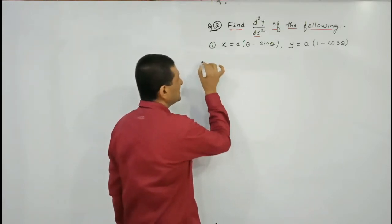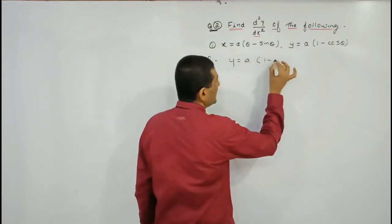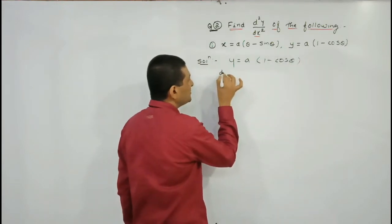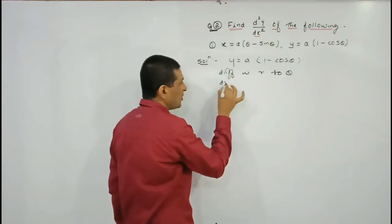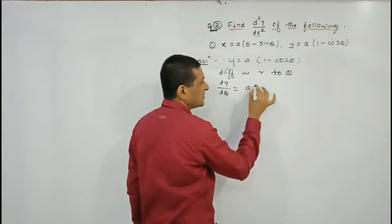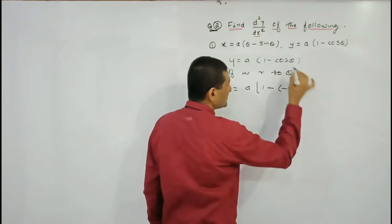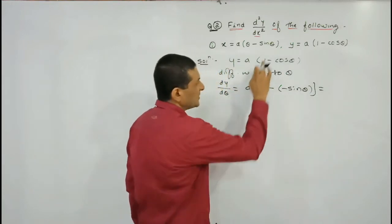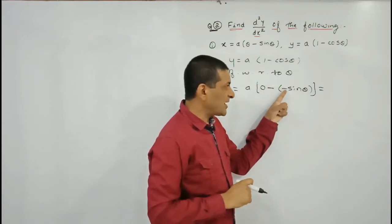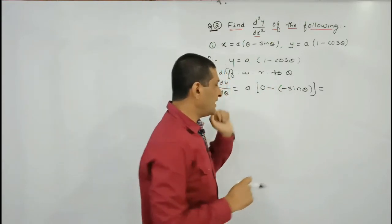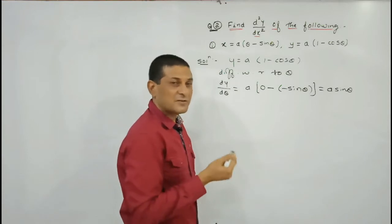Already in the last exercise we have seen how to find out differentiation of a parametric function, so easily we are able to find out first order differentiation. The important thing is to find out the second order derivative because in that case we have to make proper use of chain rule. First let us find out the first order derivative, and later on we will see how to use chain rule to find the second order derivative.